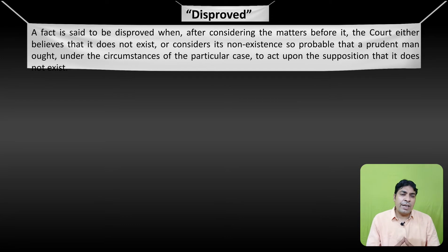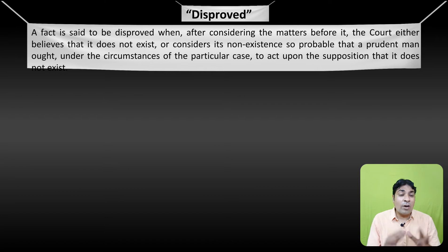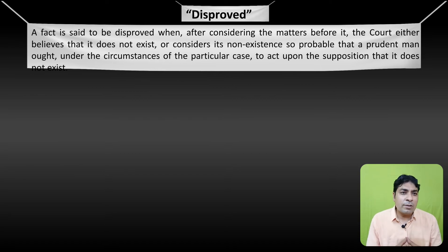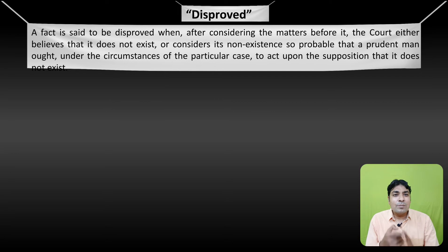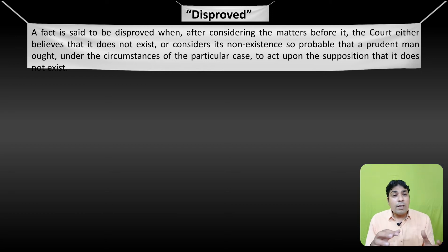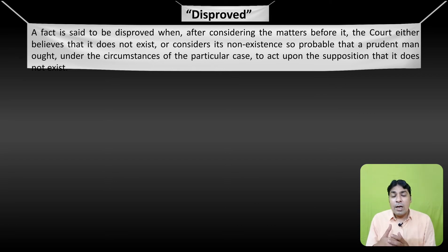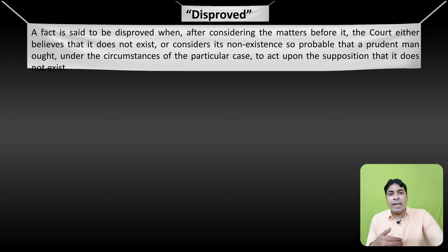Now the second definition is definition of disproved. A fact is said to be disproved when, after considering the matters before it, the court either believes that it does not exist, or considers its non-existence so probable that a prudent man ought, under the circumstances of a particular case, to act upon the supposition that it does not exist. There is only one difference between the definition of proved and disproved — wahan par existence of a particular fact tha, yahan par non-existence of a particular fact hai. If the court considers all facts and circumstances and concludes that what was claimed does not exist — non-existence is there — it means the fact has been disproved.